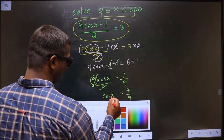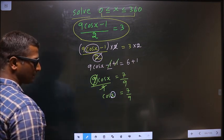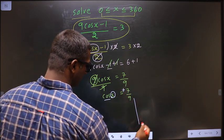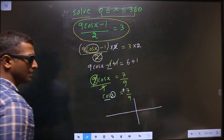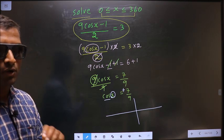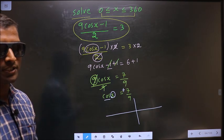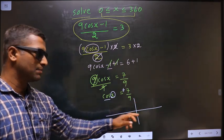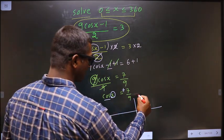Now to get the values for x, here we have cos and it is positive. Check in what all quadrants is cos positive. It's All Silver Tea Cups, so cos is positive in the first and in the fourth.